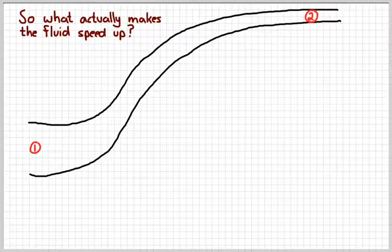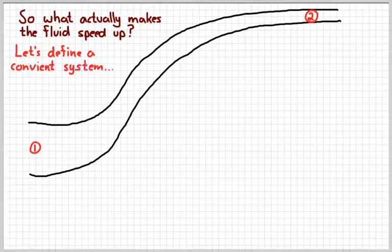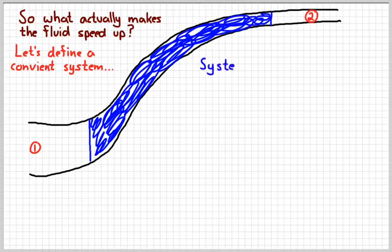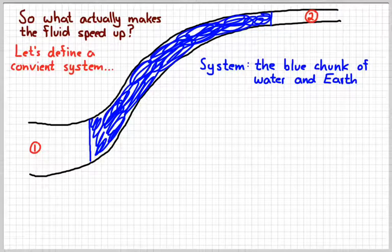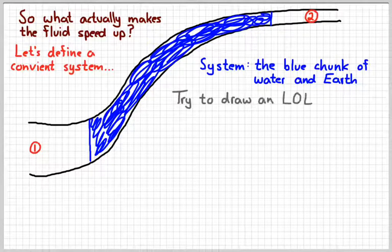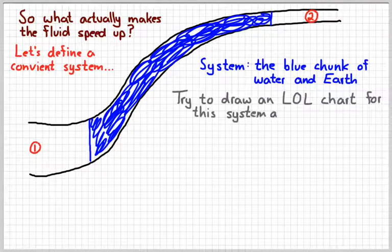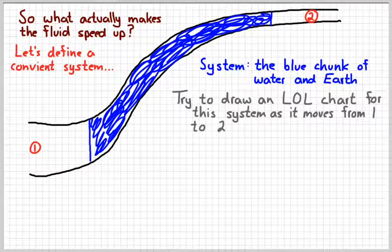So the next question, what actually made the fluid speed up? And what makes the pressure go down? In other words, how does the energy work out in all of this? So let's define a simple system. I'm going to shade in some of my fluid. So I'm just going to choose that little part where the pipe is bending and it's getting narrower to be my system. And I'm also going to include the earth, because the earth is what causes all these things to have weight. So what I want you to do is try to take that system, the blue chunk of water and the earth, and try to draw an LOL chart as the system moves from point one to point two. So pause for a second and just see if you can draw an LOL chart showing that.